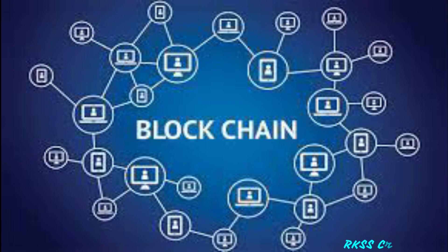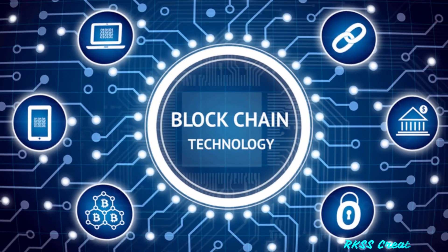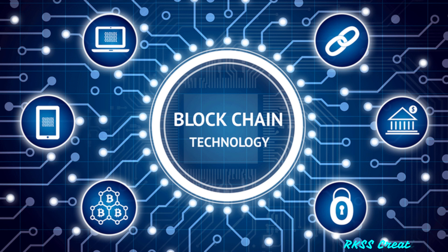First, let's talk about storage structure. One key difference between a typical database and a blockchain is the way the data is structured. A blockchain collects information together in groups, also known as blocks, that hold sets of information. Blocks have certain storage capacities, and when filled, are chained onto the previously filled block, forming a chain of data known as the blockchain.